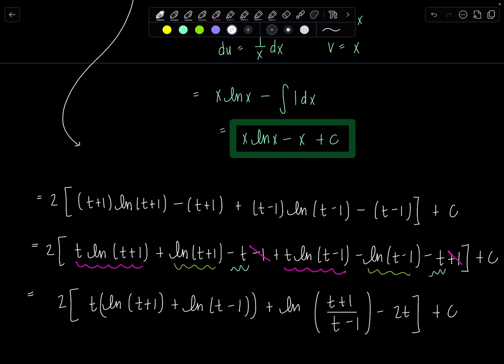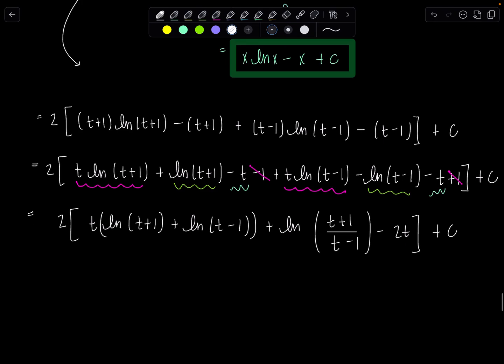Now from here, we're going to combine these as well into a single logarithm. Multiply the argument. So then we've got 2t times natural log t squared minus 1 plus natural log t plus 1 over t minus 1 minus 2t plus c.